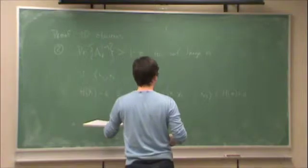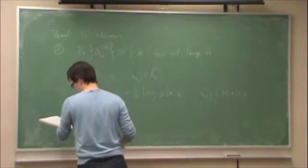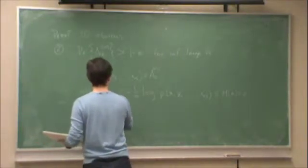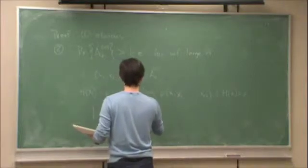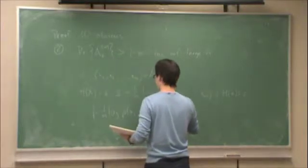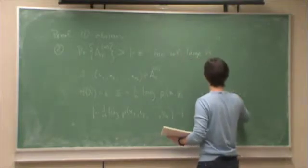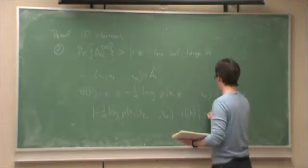So therefore, this is like saying, if I rearrange this, then the magnitude of minus one over n log p of x1, x2, and so on up to xn, minus h(X) is less than epsilon.